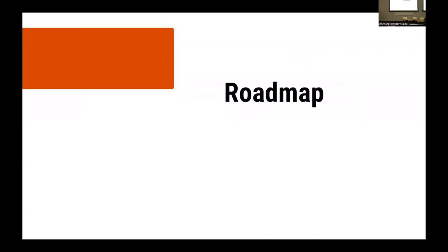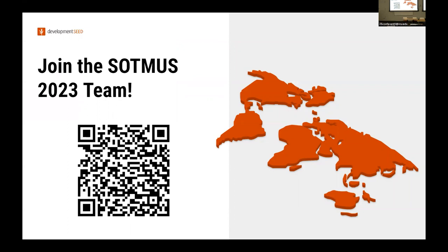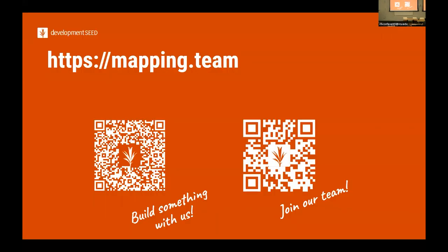So what's the roadmap for OSM Teams? More integrations, and hopefully more organizations that see the benefit of just having community groups in this synchronized API that we can build together and have all these communities managed in one place. There are QR codes — join the team right now. Join our team or build something with us.